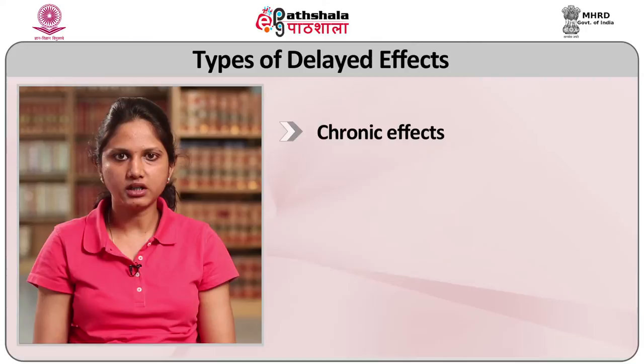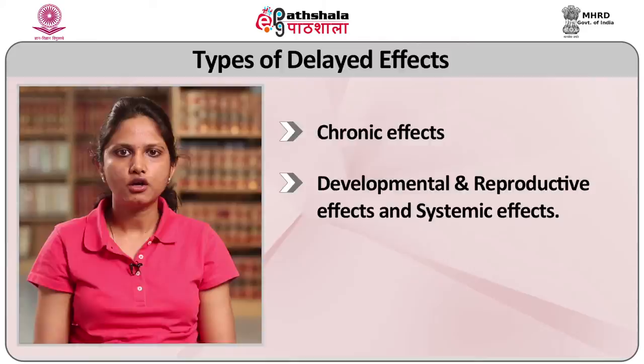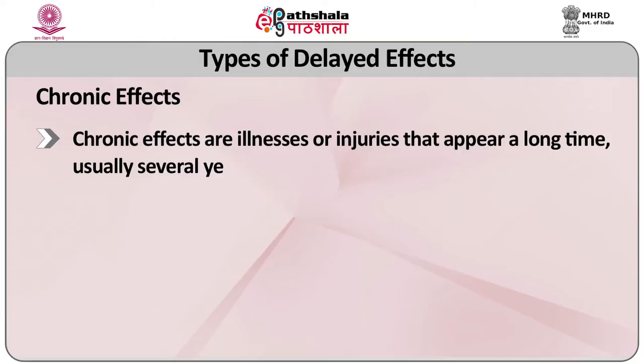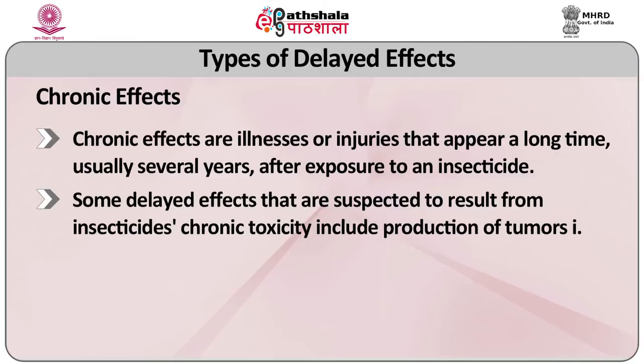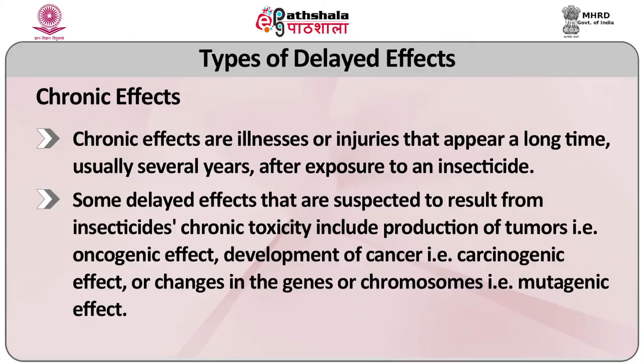Some kinds of harmful effects may not occur unless a certain set of circumstances is present. These effects can occur after the first exposure, but the likelihood is small; continuous or frequent exposure over a long period of time makes it more likely that all necessary factors will be present. Some genetic changes that result in the development of cancer or other delayed effects fall into this category. Types of delayed effects include chronic effects, developmental and reproductive effects, and systemic effects. Chronic effects are illness or injuries that appear a long time — usually several years — after exposure to an insecticide. Chronic toxicity includes production of tremors (oncogenic effects), development of cancer (carcinogenic effects), or changes in the genes or chromosomes (mutagenic effects).